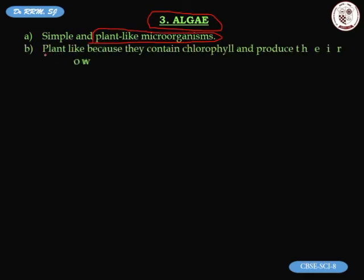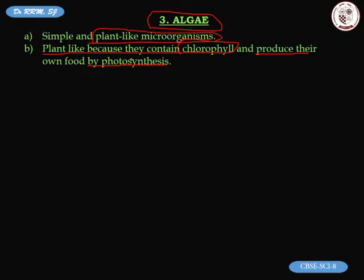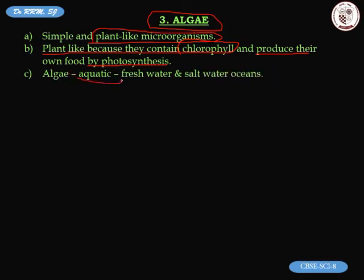Algae are called plant-like microorganisms because they contain chlorophyll — it is the chlorophyll that gives green color to plants. Moreover, they also produce their own food by the process of photosynthesis, and therefore we say that algae are plant-like microorganisms.